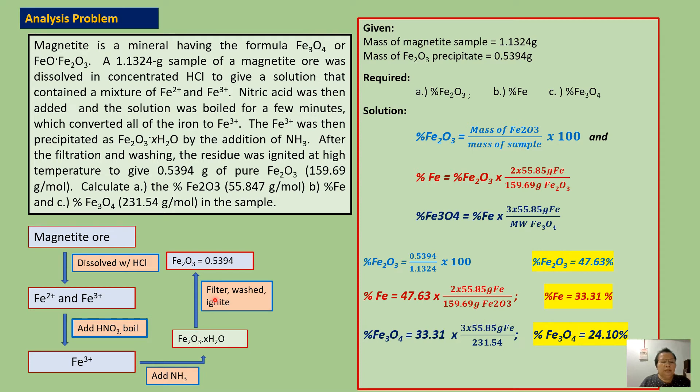Then we filter to separate hydrated ferric oxide from the filtrate, and then we wash thoroughly with distilled water, and then we ignite. After ignition, the finished product is pure ferric oxide with a mass of 0.5394 grams.